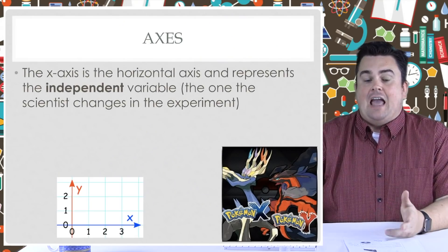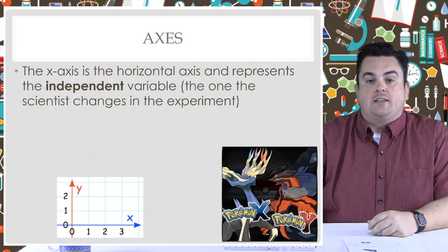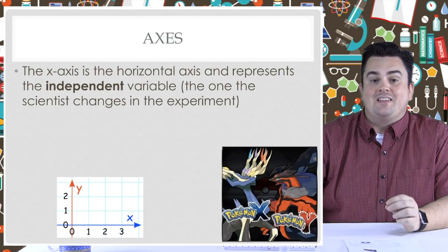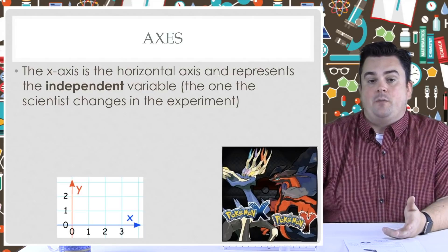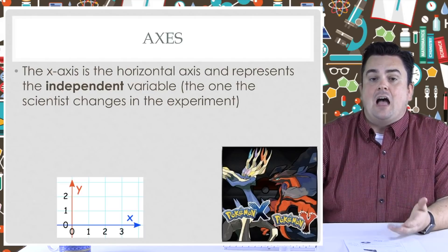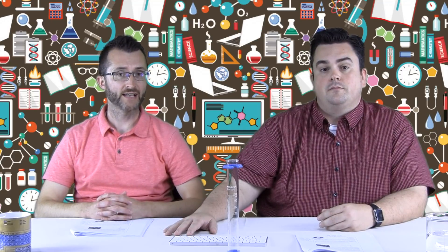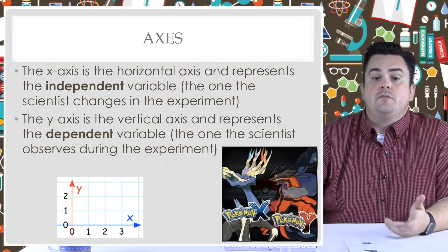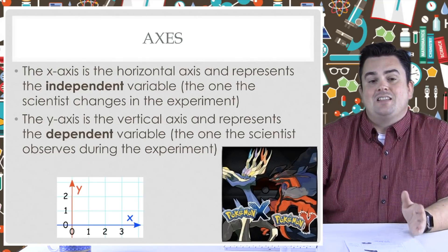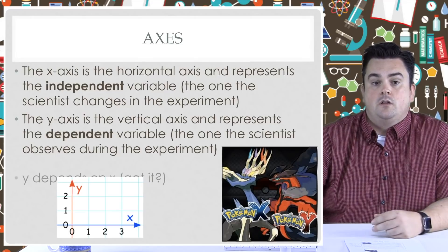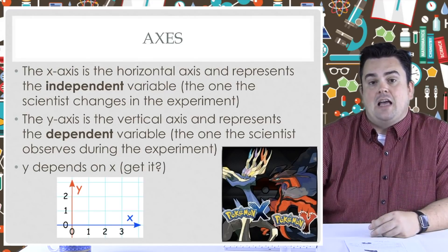Axes. The x-axis is the horizontal axis and represents the independent variable. This is the one that the scientist changes in the experiment — independent means it's the variable I am changing. And we're seeing how x affects y. The y-axis is the vertical axis and represents the dependent variable. This is the one the scientist observes during the experiment. Y depends on x. Get it?